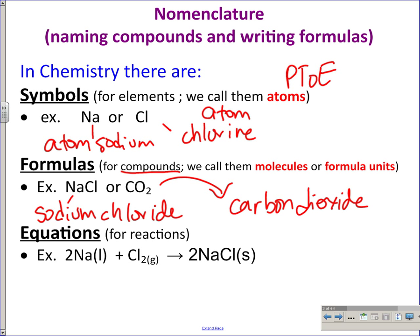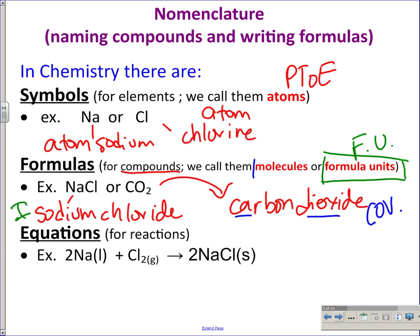There are two differences. The first compound, sodium chloride, is an ionic compound — when it's ionic, we call the formula a formula unit. If it's a covalent compound, such as carbon dioxide, we call it a molecule, abbreviated MOL. We need those distinguishing terms to indicate what kind of compound we're talking about.